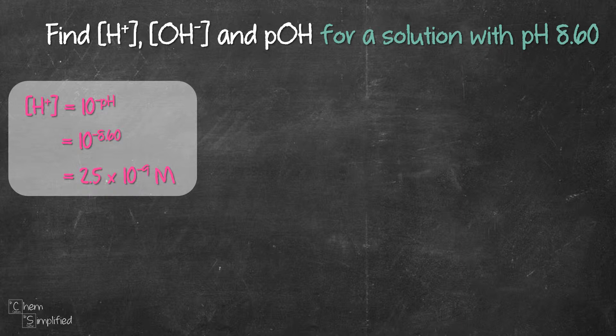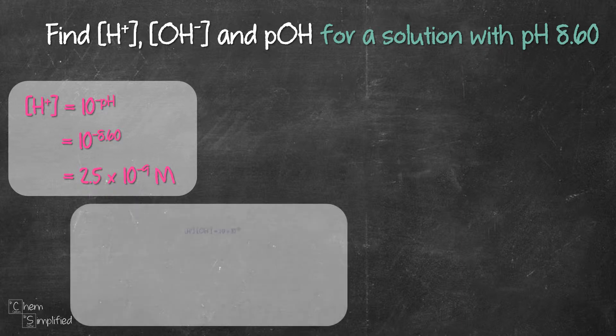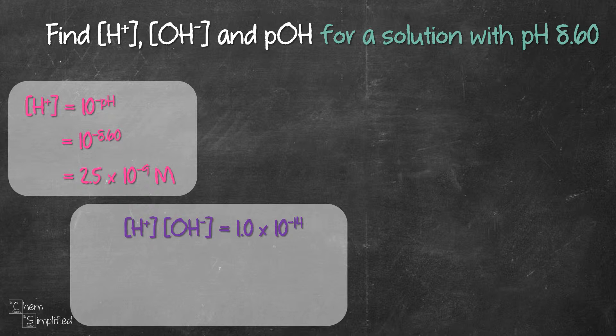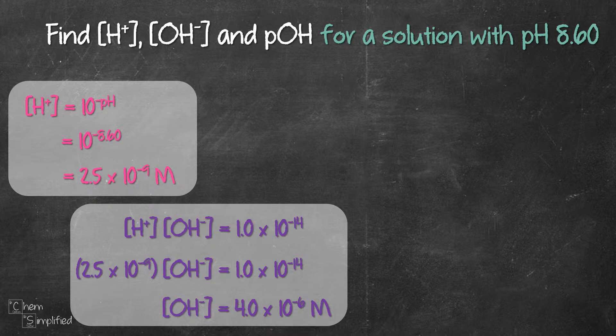From the calculated H+ concentration, we can then easily find the OH- concentration, and we do that by using this relationship formula. So we plug in 2.5 × 10^(-9) for H+, and we do the division, and we get [OH-] = 4.0 × 10^(-6) molar.